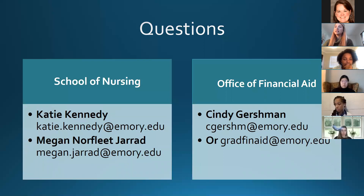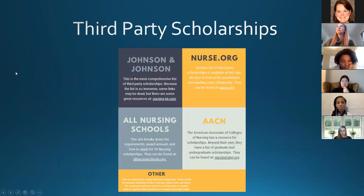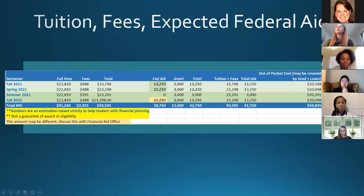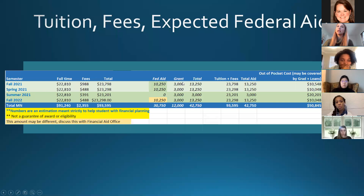When applying to outside scholarships, apply as a graduate student since the MN program is a graduate program. Is the $10,250 a grant or scholarship? No — the $10,250 per semester is unsubsidized loan funding based on your FAFSA and the amount of federal aid you've taken out previously. It is graduate-level federal financial aid, and it is a loan — it needs to be paid back. The $3,000 grant does not need to be paid back.